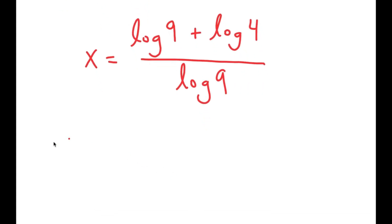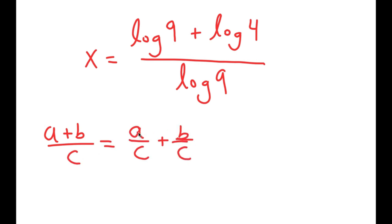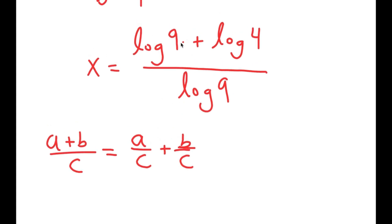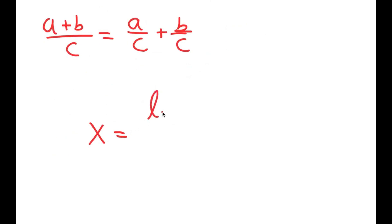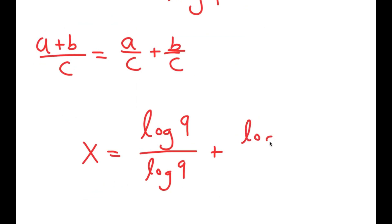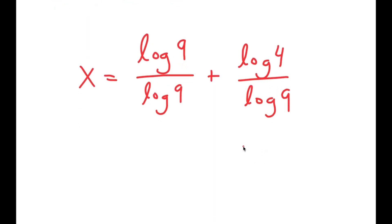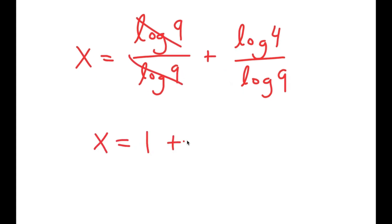Using fraction properties, a plus b over c equals a over c plus b over c. So I have log 9 plus log 4 over log 9, which I rewrite as log 9 over log 9 plus log 4 over log 9. Anything over itself equals 1, so log 9 over log 9 cancels to 1, and I get 1 plus log 4 over log 9.